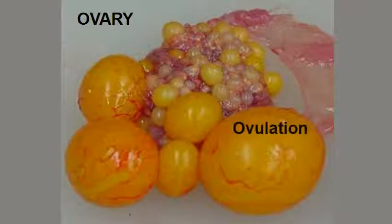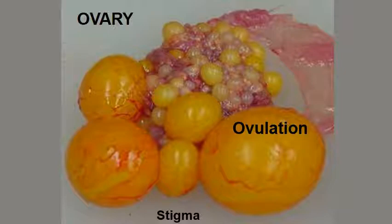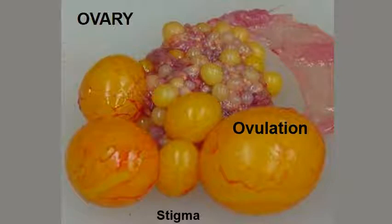The release of a yolk is called ovulation. The yolk is released along the stigma or suture lines, which are the clear lines on the yolk with no blood vessels visible. Only one yolk is supposed to be released at one time. If the hen releases two yolks, you end up with a double-yolked egg. The following old video shows you the release of a yolk from the ovary in a live chicken.